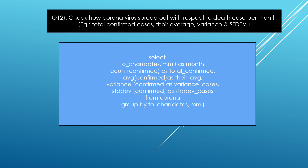The next question is: check how coronavirus spread with respect to death cases per month — for example total confirmation cases, their average, variance, and STD. Basically I used SELECT MONTH(dates) as month, COUNT(confirmed), AVG(confirmed), VAR(confirmed), and STD(confirmed) from corona, grouped using GROUP BY MONTH(dates).